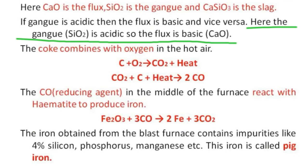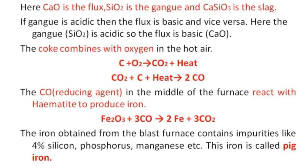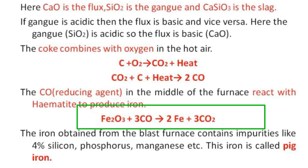We use calcium oxide as the basic flux. Coke combines with oxygen in the hot air to form carbon dioxide, and this carbon dioxide reacts with coke to form carbon monoxide. Carbon monoxide acts as the reducing agent. The carbon monoxide in the middle of the furnace reacts with hematite to produce iron: Fe2O3 + 3CO → 2Fe + 3CO2.